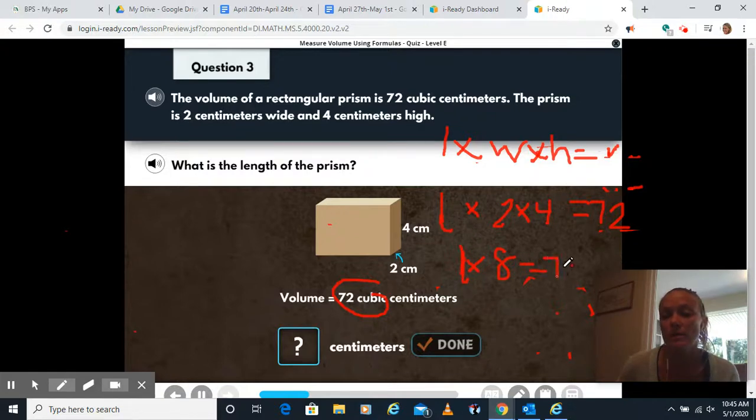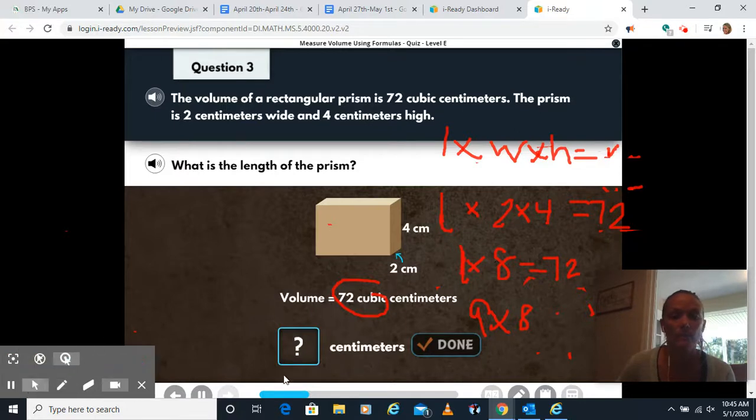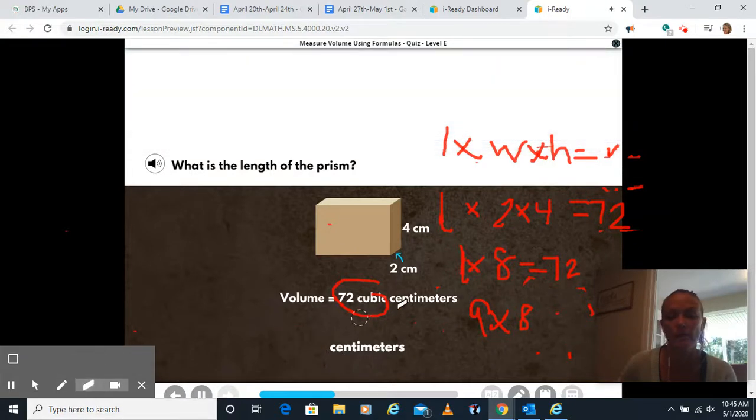So I have two times four is eight. This kind of looks like a one, I want to make sure that looks like an L, there you go, is 72. So something times eight equals 72. Well, I know nine times eight is 72. So my length would be nine. Or I could do 72 divided by eight. I'm going to put a nine in here. Click done.